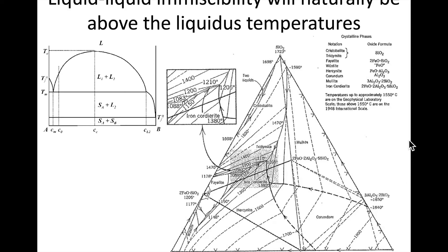The last feature to look at on ternary phase diagrams is miscibility. We described this using Gibbs free energy in the binary case, where it forms a dome shape. In a ternary system, dimensionality changes things, and what we tend to see are arcs rather than domes.